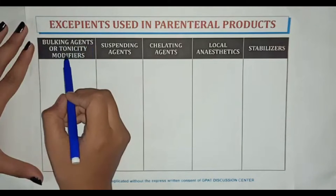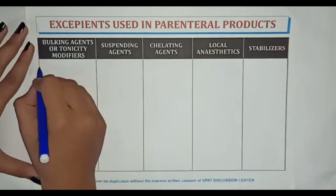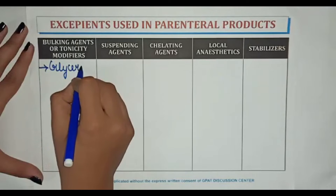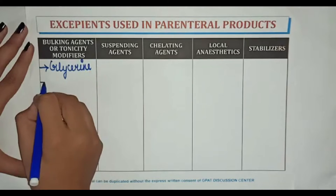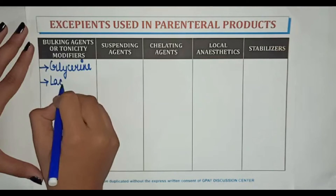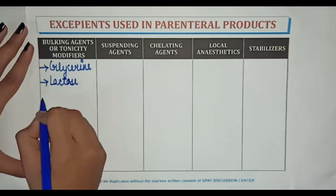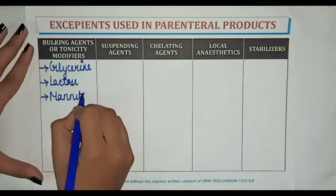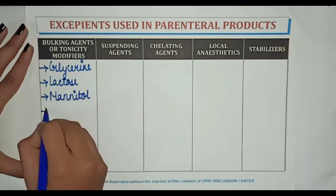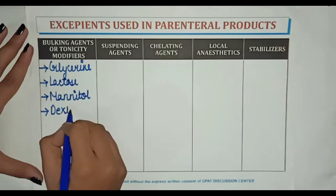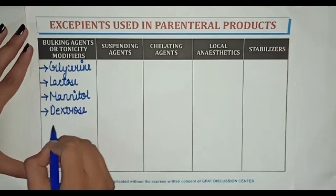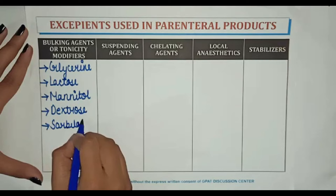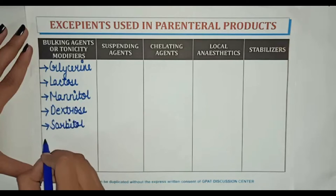Tonicity modifiers used as excipients include: glycerin, lactose, dextrose, sorbitol, and sodium chloride.